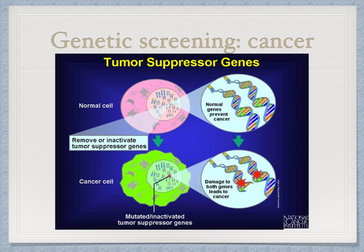Another area where genetic screening can be valuable is in detecting oncogenes that are responsible for cancer. Cancer may develop by tumor-suppressor genes mutating so that they cease to inhibit cell division. It requires both alleles, as you can see in the bottom diagram there, to mutate to inactivate tumor-suppressor genes and to initiate the development of a tumor.